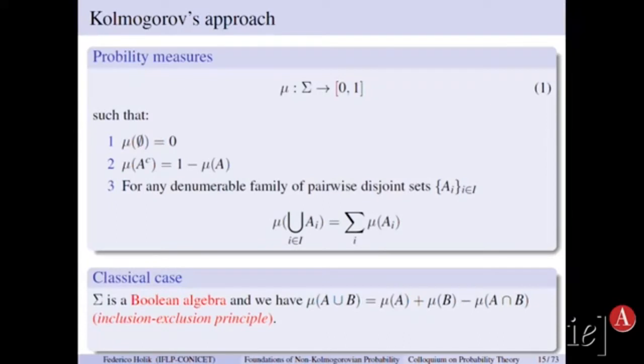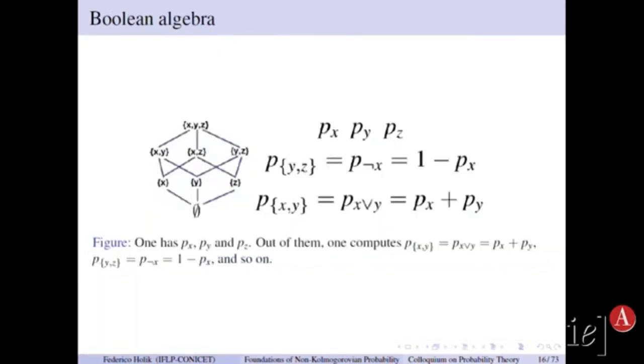So what Kolmogorov's axioms say is that a probabilistic state on a system will be given by a measure on an algebra of events. I will go to the next slide in which everything is simpler.